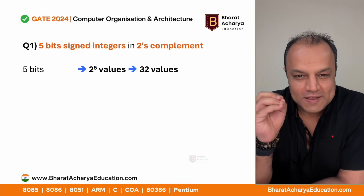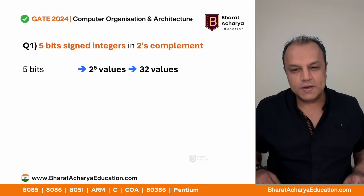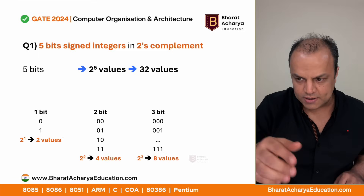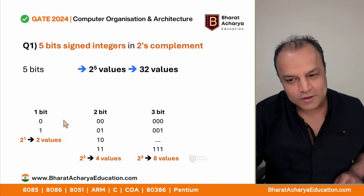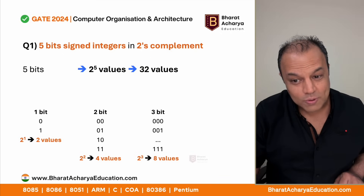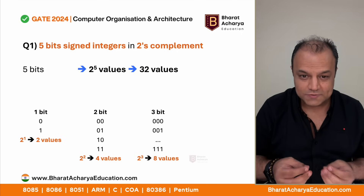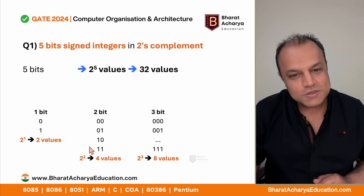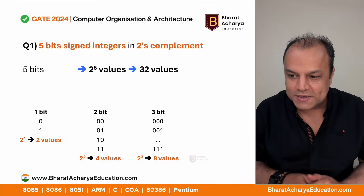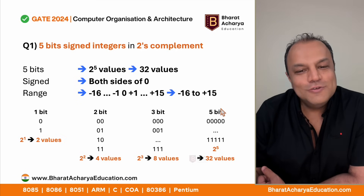A five-bit number will have two raised to five values, that is 32 values. A one-bit number can have two values: zero and one. A two-bit binary number can have four possible values: 00, 01, 10, 11 - that's two raised to two. A three-bit number will have eight values - two raised to three is eight. In general, an n-bit number will have two raised to n values, so a five-bit number will have 32 values.